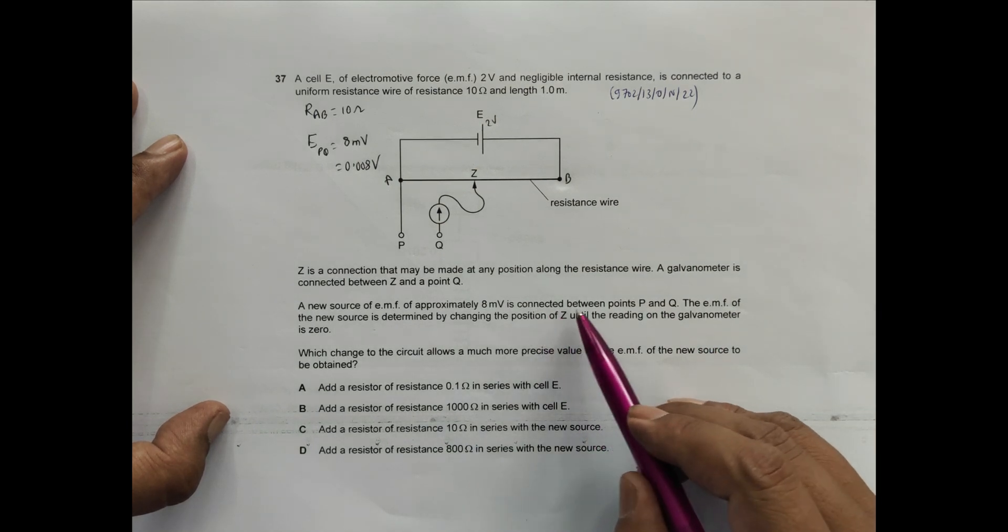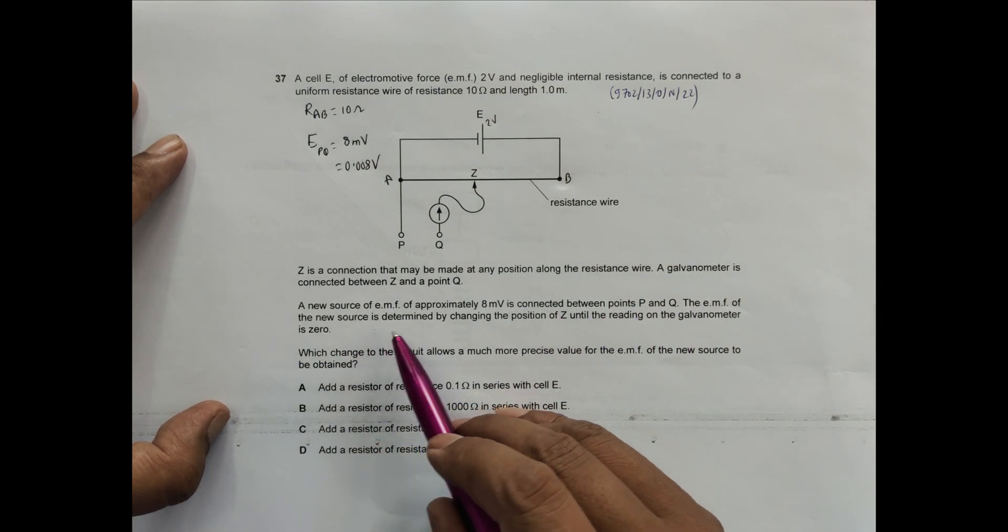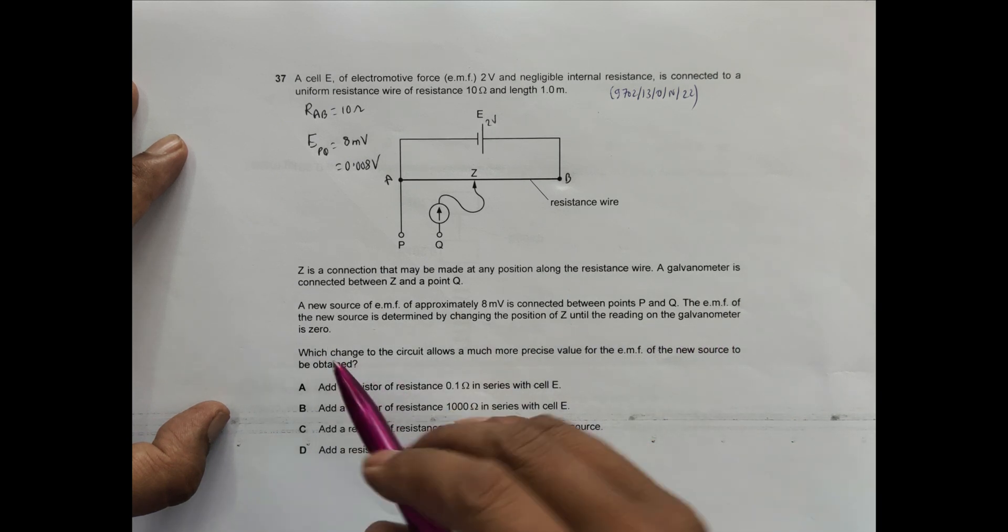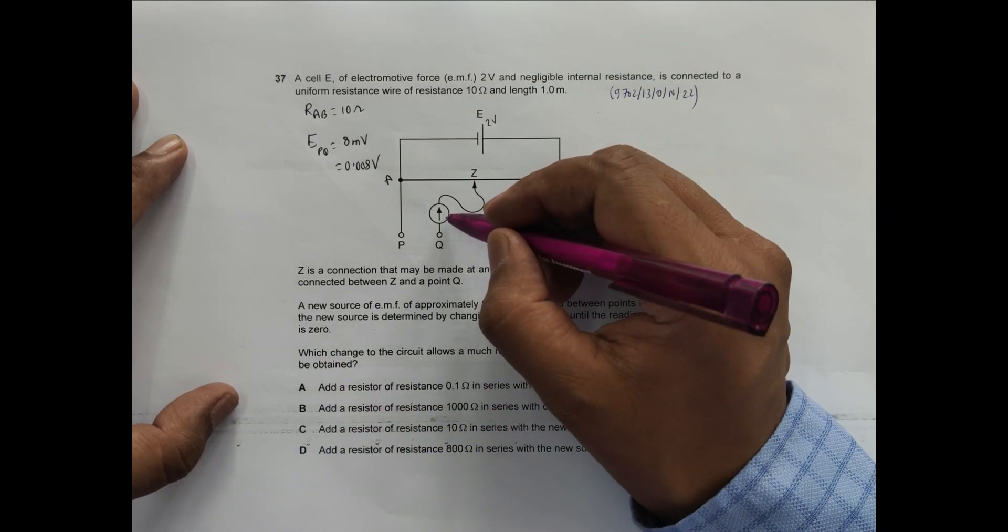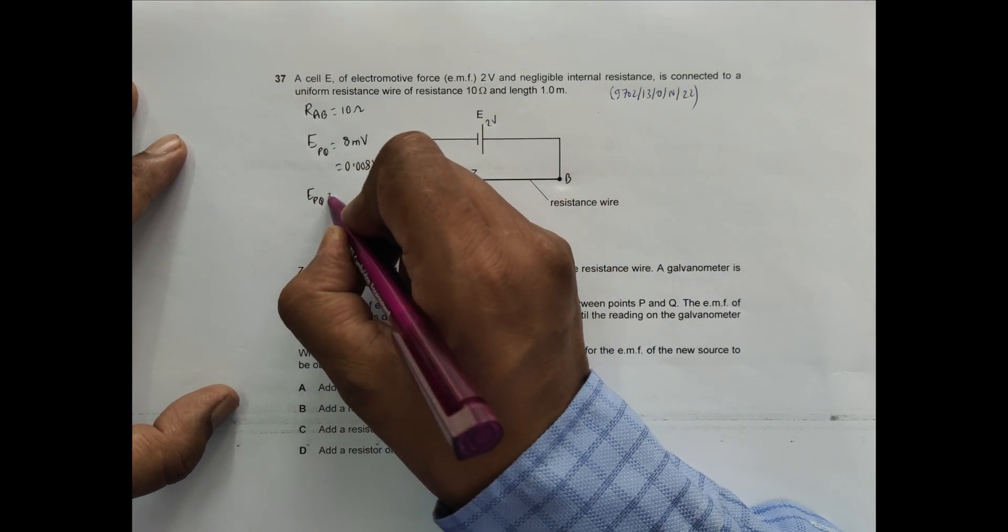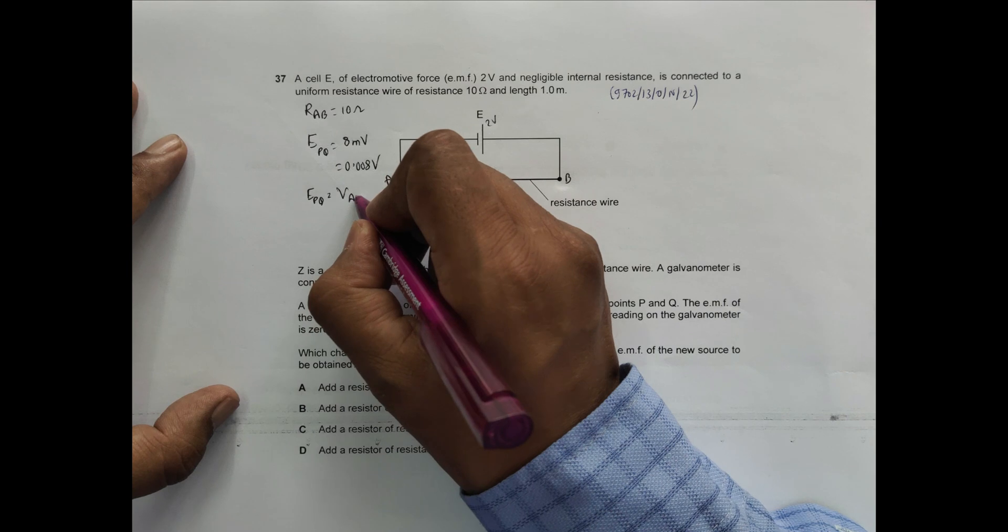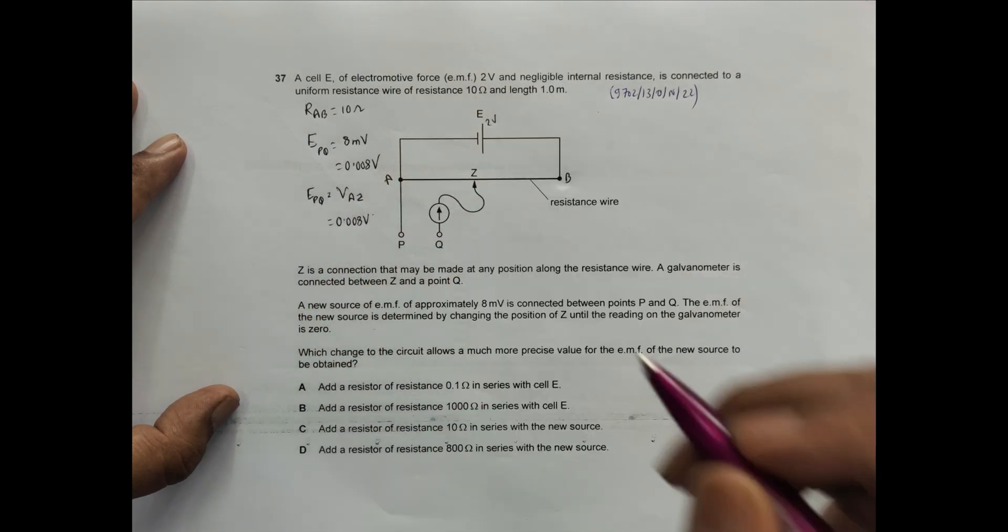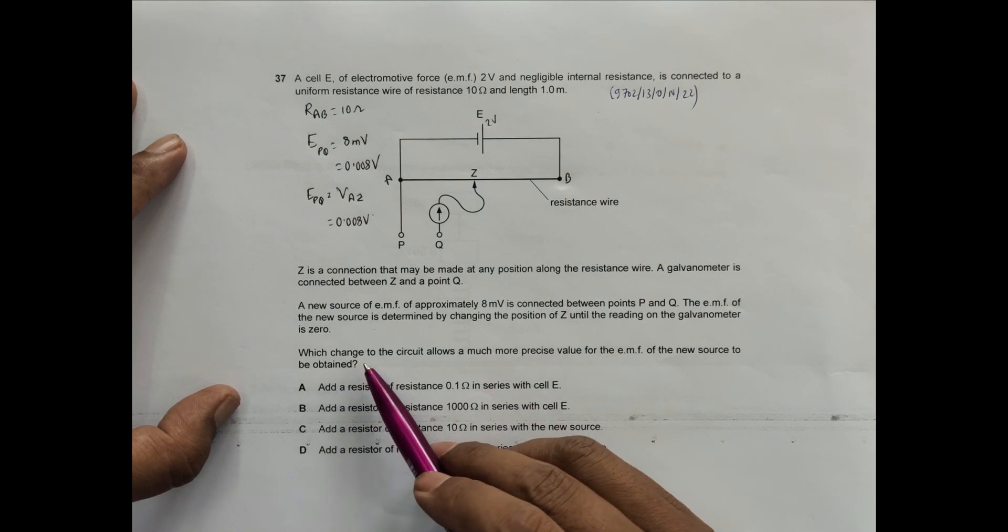The EMF of the new source is determined by changing the position of J until the reading on the galvanometer is zero. At that time, EPQ should equal VAZ, and that equals 0.008 volts.